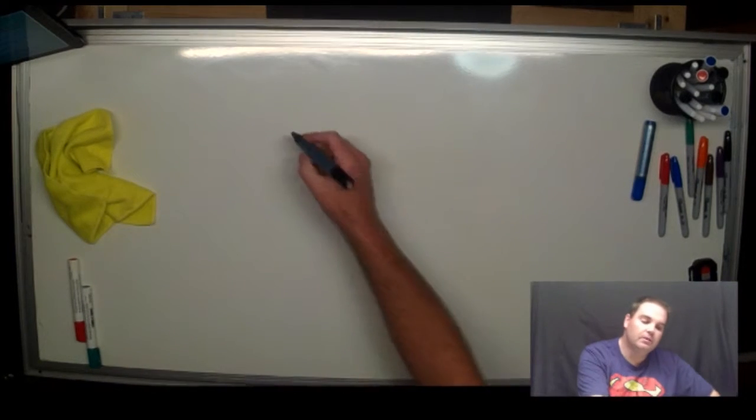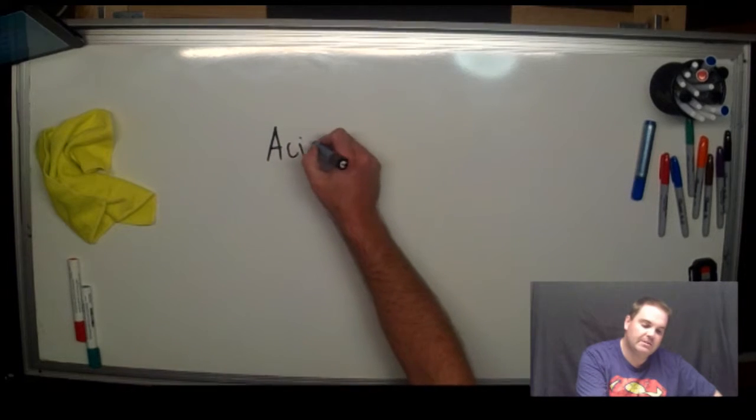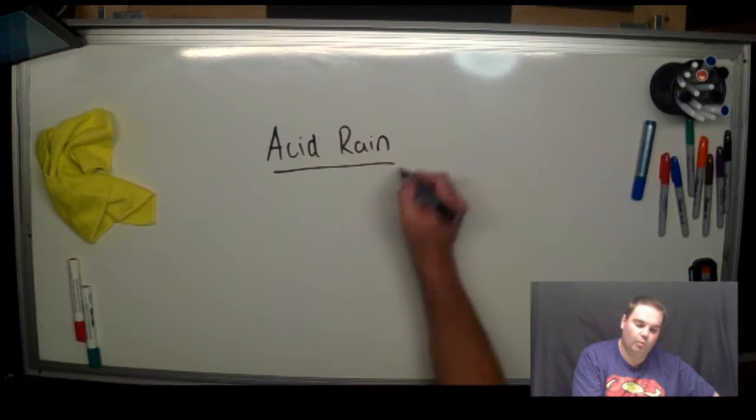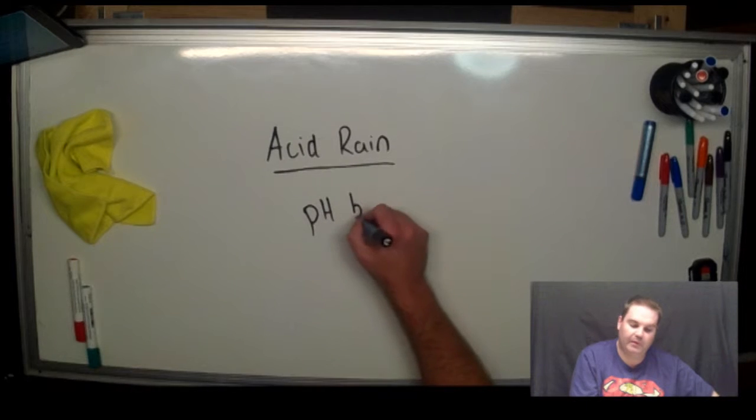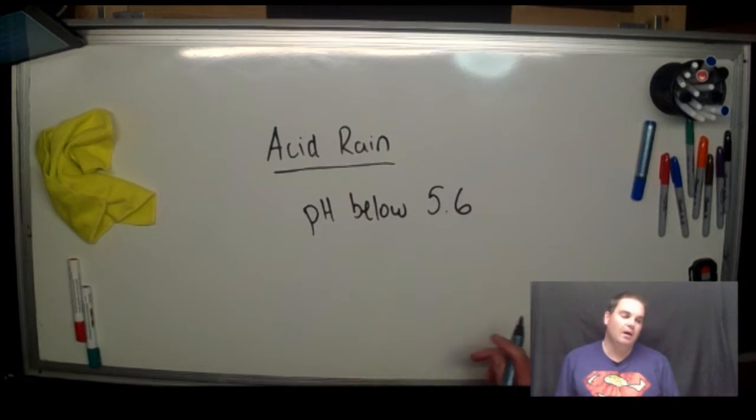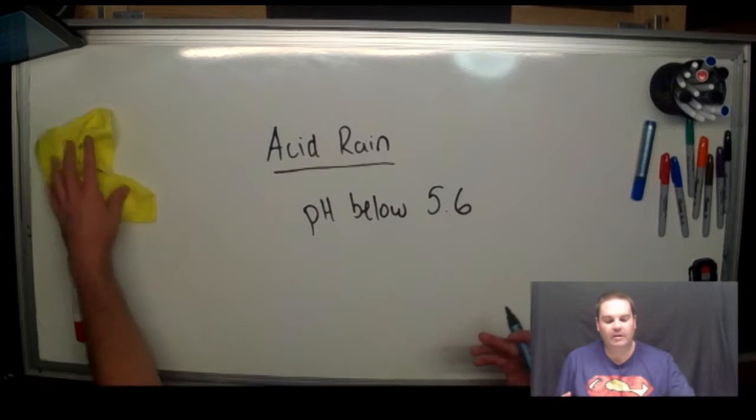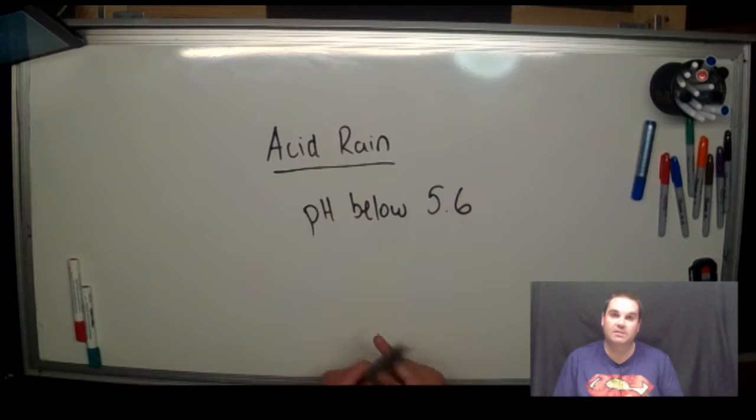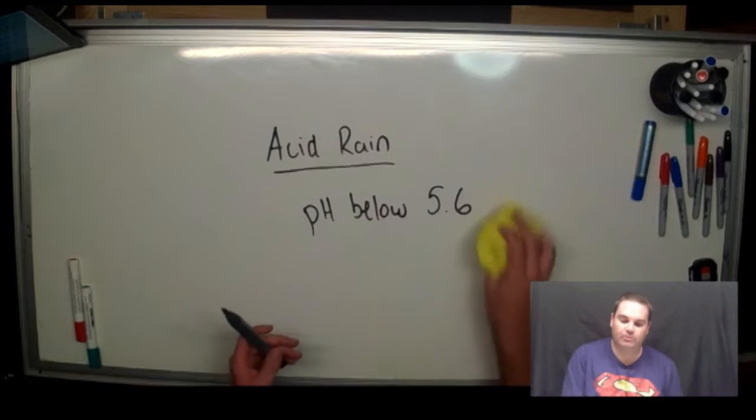Acid rain is defined as any rain with a pH below 5.6. What we mean by that and why we specify that it's below 5.6 is because all rain is naturally acidic.